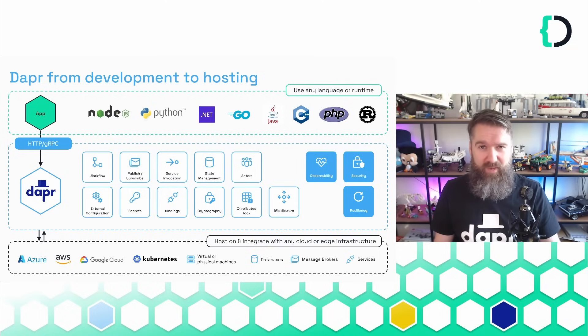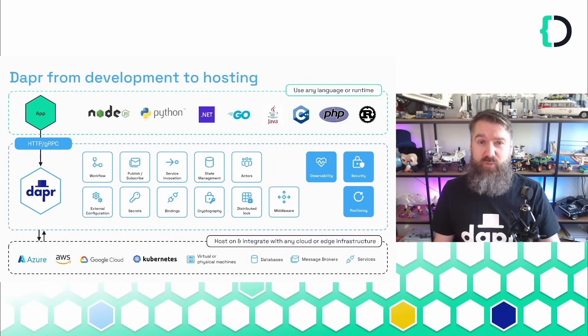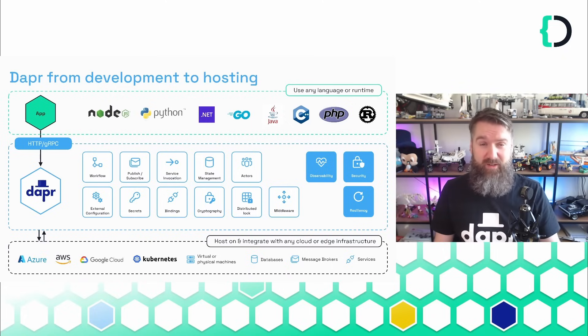Dapr provides many APIs developers can use to quickly build applications. There are APIs for Workflow, Pub-Sub, Service Invocation, Key-Value Store, Actor Model, and many more.